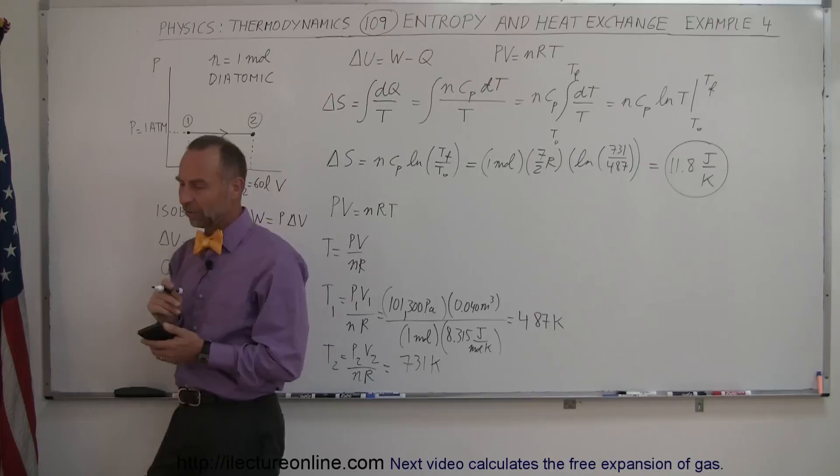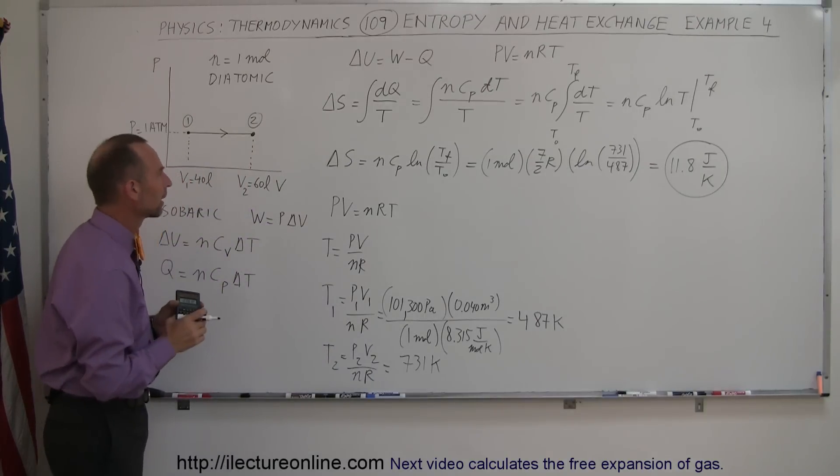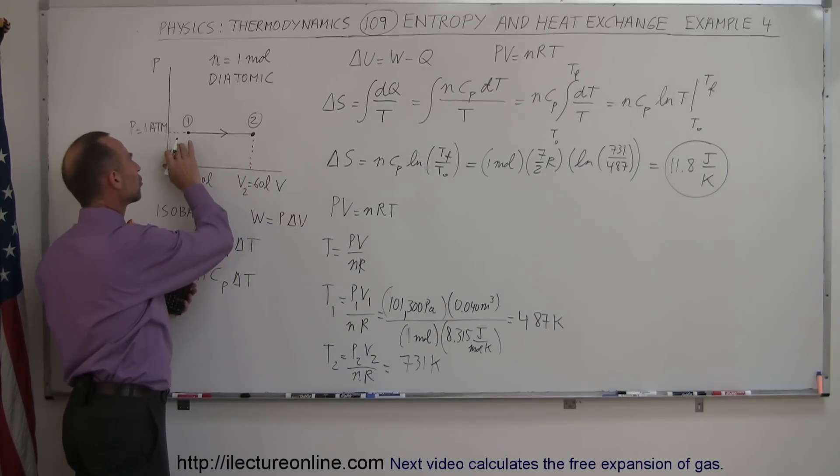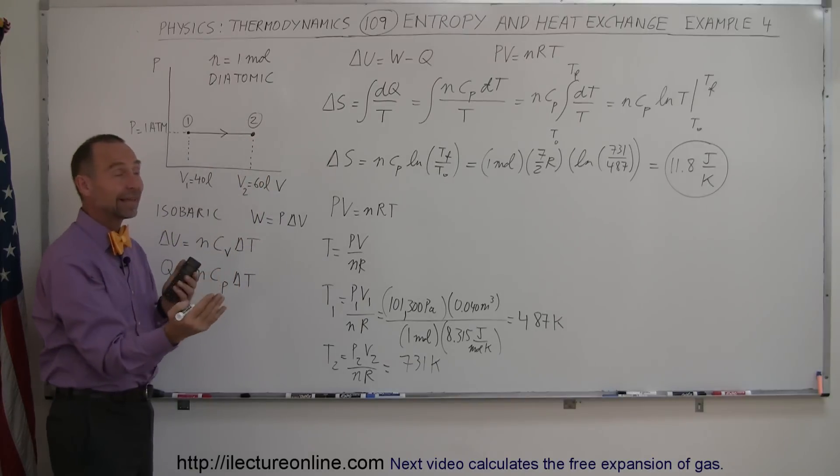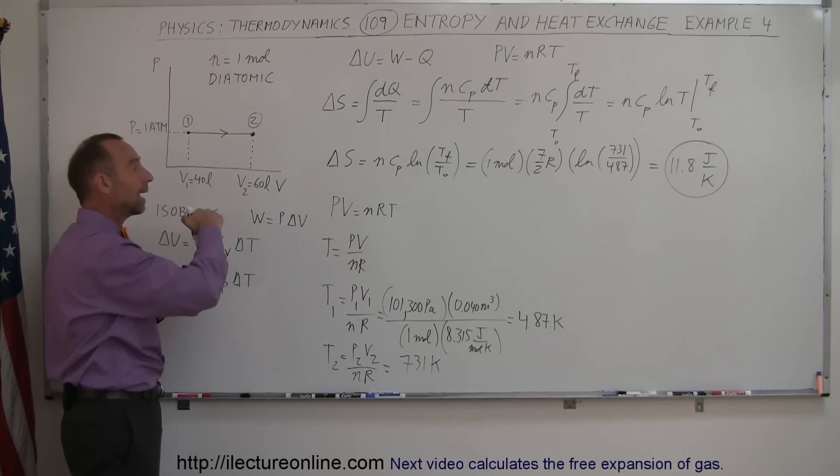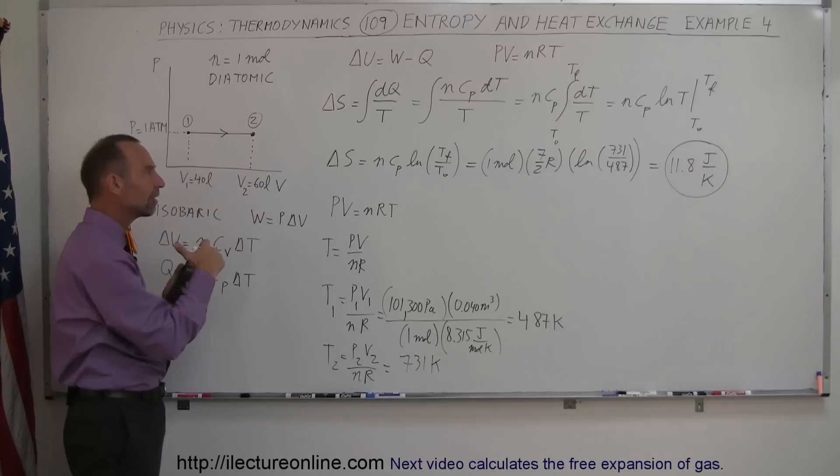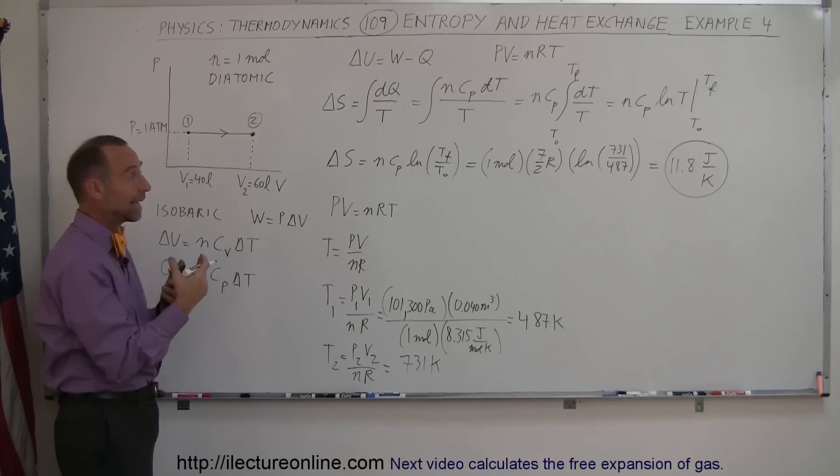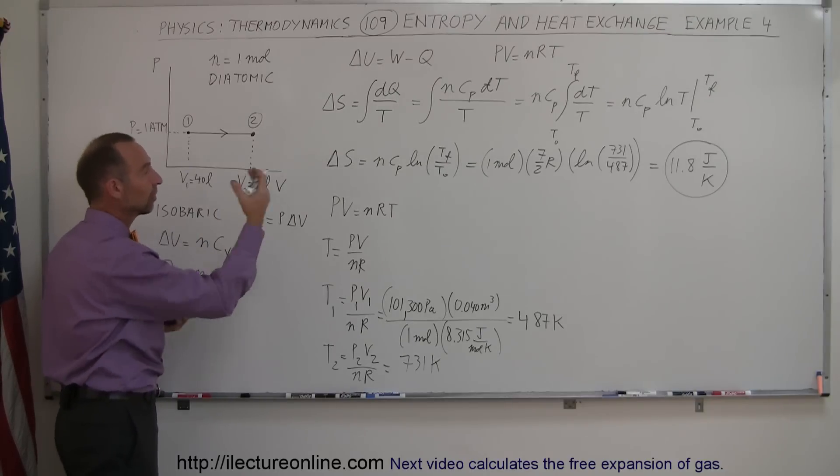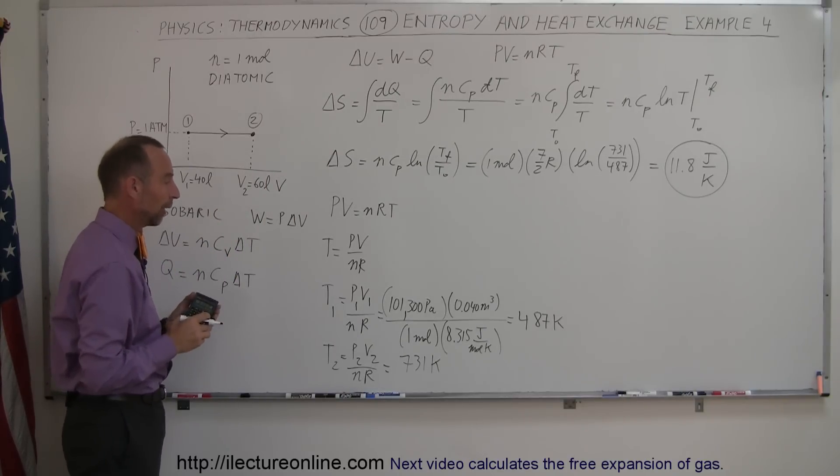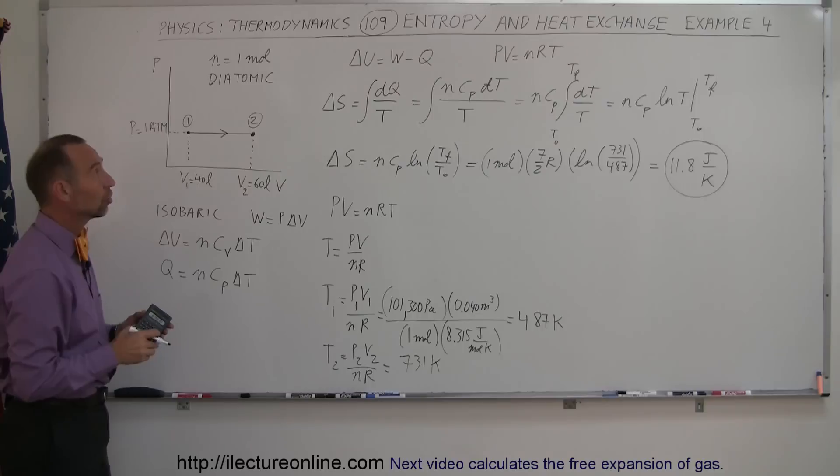Notice that it's a positive delta S. Let's see if that makes sense. Well, it starts at a low temperature and finishes up at a higher temperature, which means that heat was added to the gas. Since heat was added to the gas, it's a positive heat exchange, and therefore we expect a positive delta S, so it seems like that would be correct. And that's how you find the change in the entropy using a thermodynamic process.